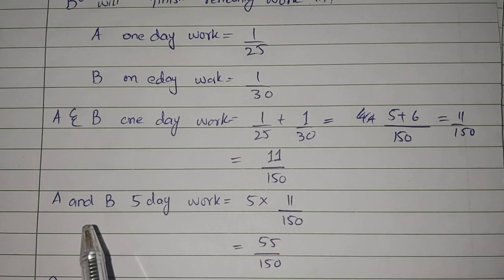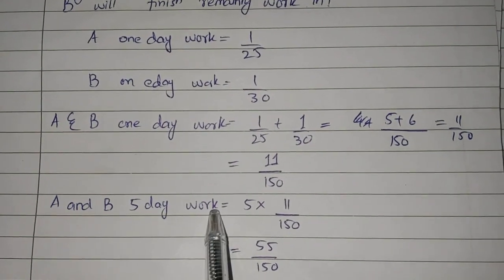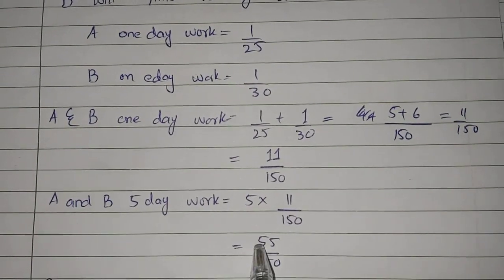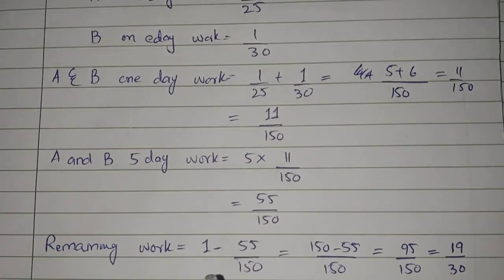Now let's see A and B's 5 day work. Simply multiply by 5: 5 times 11/150 equals 55/150.